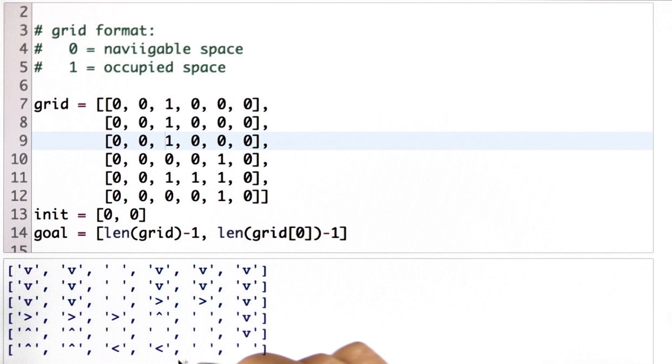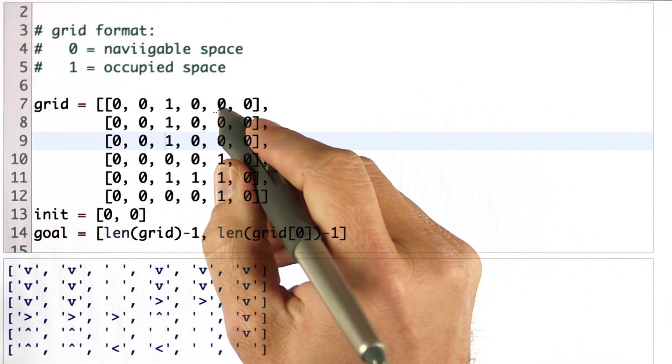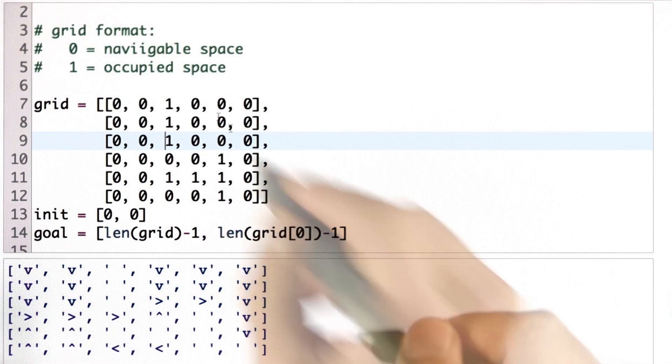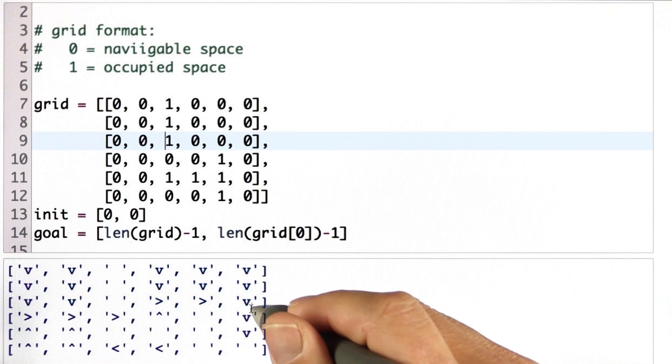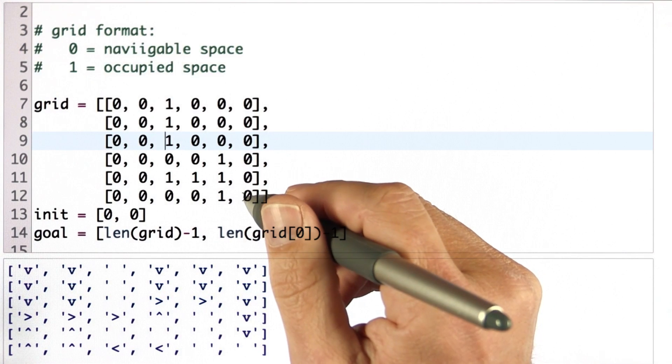The optimal policy is ambiguous. Sometimes there's multiple optimal actions. For example, up here, you go right or down. For other places, like the ones over here, it's not ambiguous. There's only one optimal thing to do, which is going down.